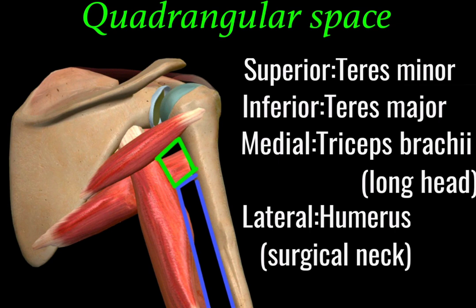Above the lower triangular space there comes the quadrangular space, which is quadrant in shape. It is bounded superiorly by teres minor muscle, inferiorly by teres major muscle, medially by the long head of triceps brachii, and laterally we have the surgical neck of the humerus bone.